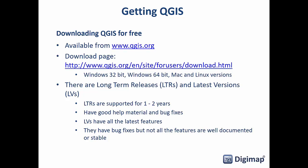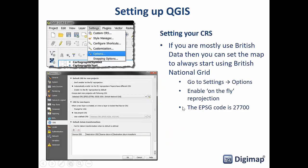Once you've downloaded and installed QGIS, there are a few setup steps. There's a language option called 'locale' in the options box. If you're going to be using British data, you can set the map to always start using British National Grid as its default coordinate reference system. Go into Settings > Options and enable on-the-fly reprojection, then set the default CRS to British National Grid — a great way to set up for Digimap data.